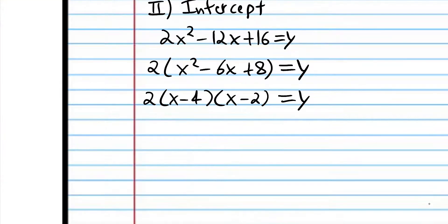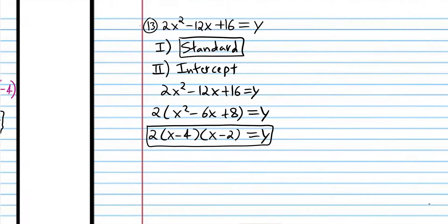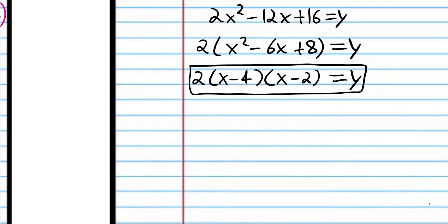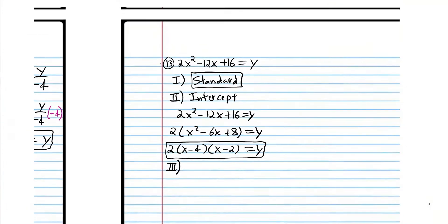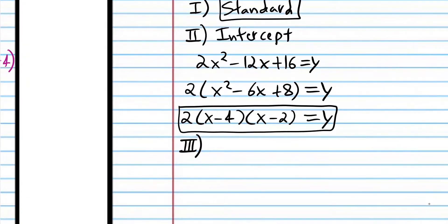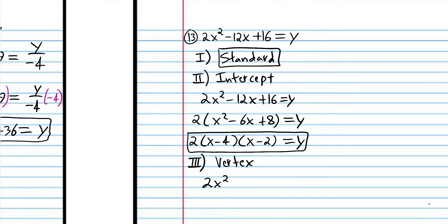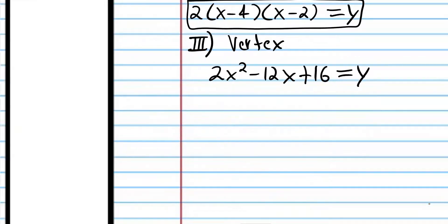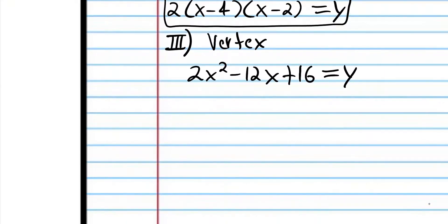Now we're going to convert to vertex form. To convert to vertex form, we're going to start with standard form — I'll rewrite the standard form here. Usually we start where we left off, but in this case it's going to be better to start with standard form. To convert to vertex form, we have to complete the square, but we can't if there's a coefficient on the x squared term.